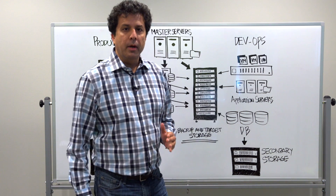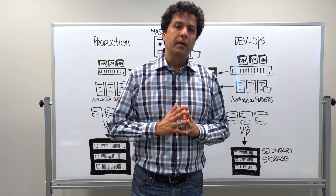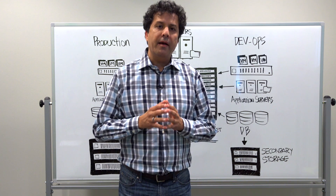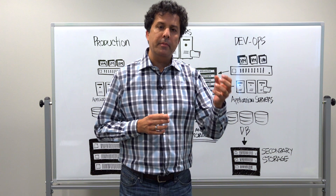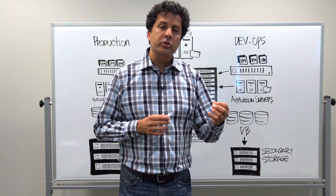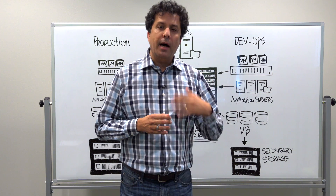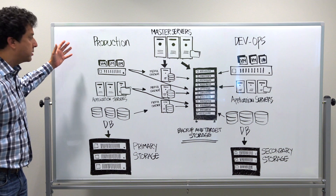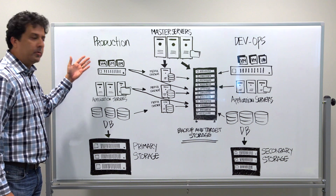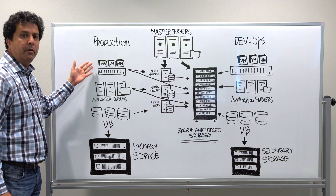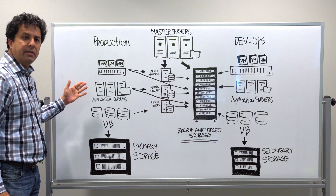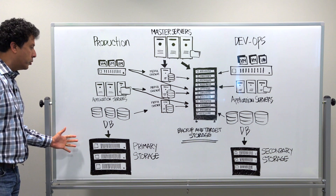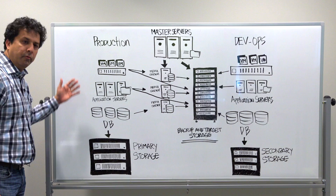To understand that, let us try and understand what is a typical landscape that we see in the data center today. In the data center today, we have application servers, virtualized environments, database servers, and production storage deployed. We have a virtualized environment with a VM farm running a typical virtualized workload, application servers and file servers, databases to run mission critical applications, and primary production storage which runs all of these various workloads.